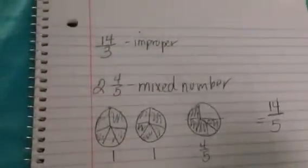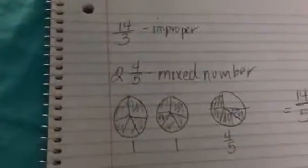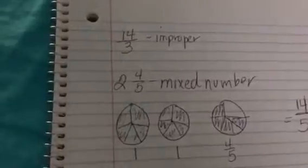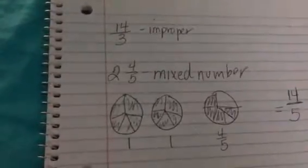All right, Taylor, part two, improper fractions. So I have 14 thirds. What I'm going to do to convert that into a mixed number is to do illustrations again.